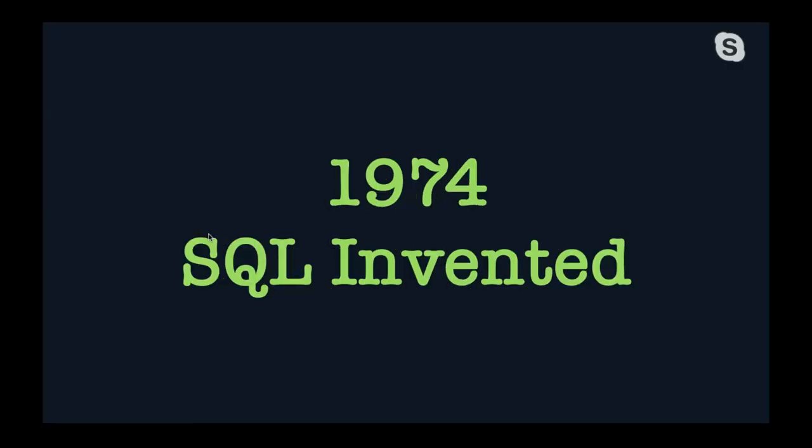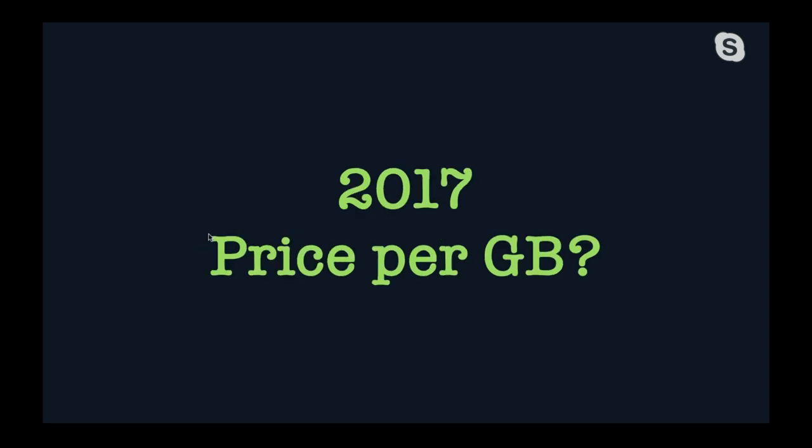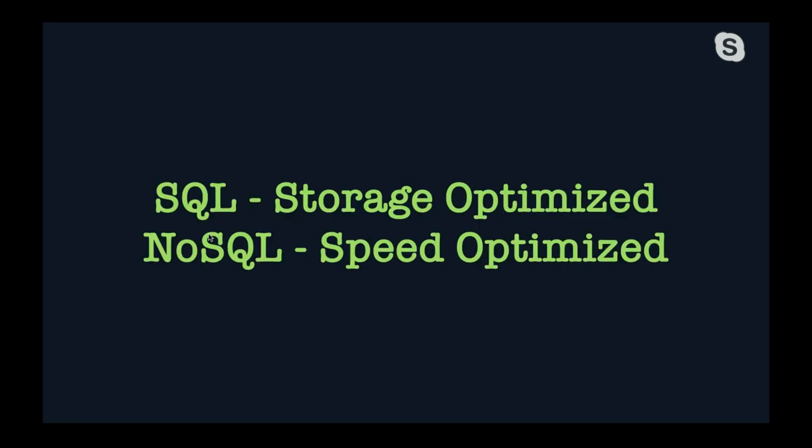I need to talk about the history of databases and how we got here. Best I can tell from Googling around, the SQL database was invented around 1974, with the technology available at that time. The price per gigabyte in 1981 — this is the Apple II era — was $700,000. Fast forward to 2017 and the price per gigabyte is two and a half cents. SQL was heavily optimized for storage, whereas NoSQL was optimized for speed, and that's what I'm talking about today.